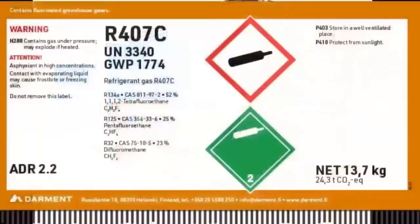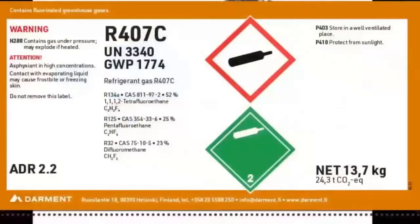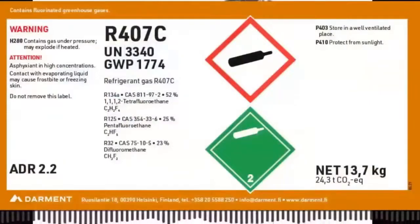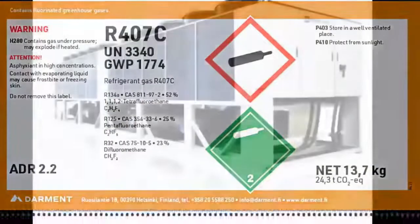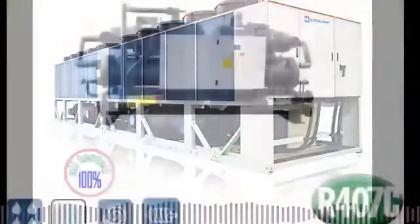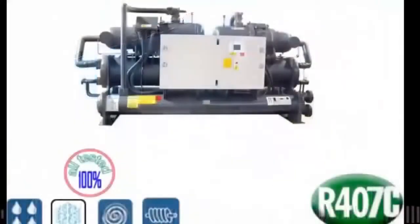R407C also has properties including pressure, capacity, and efficiency that are extremely similar to R22. R407C is found in many chillers built in Europe, since the European Union phased out R22 years ago.